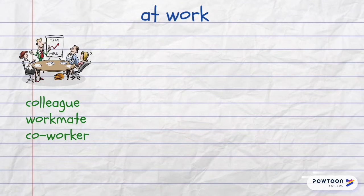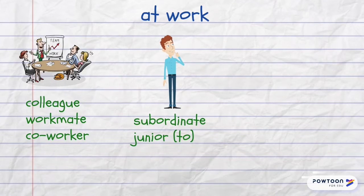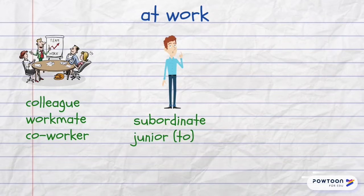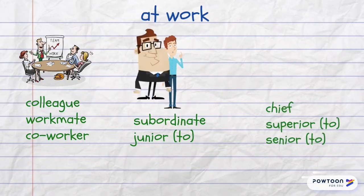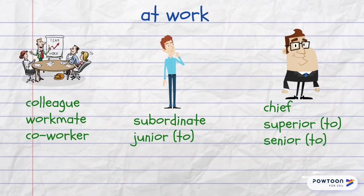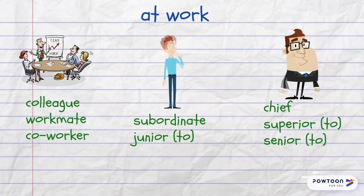The synonyms of the word 'workmate' are 'colleague' and 'co-worker'. A subordinate or junior to someone is the person who is lower in rank or in a position within a company or a team. And if the person is higher in rank, he or she is the boss, the chief, superior, or senior to someone else in a company.